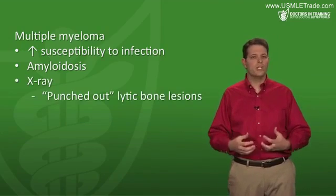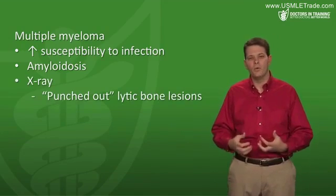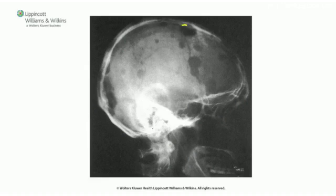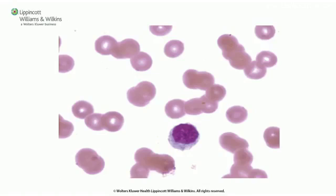On x-ray, you can see punched-out lytic bone lesions due to those local osteolytic factors — the bone can look like Swiss cheese. Those lytic lesions are a good diagnostic clue. On the peripheral smear, you'll see red blood cells stacked up like coins or poker chips, called rouleau formation, though this doesn't actually happen in vivo — it's just seen on the peripheral smear.